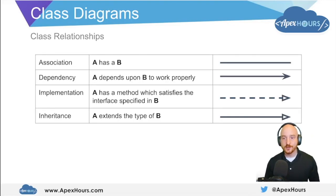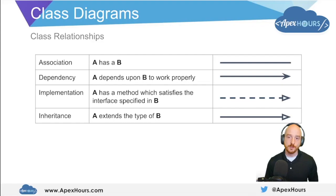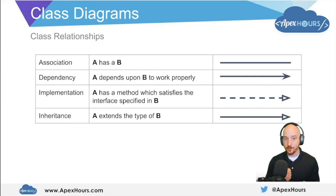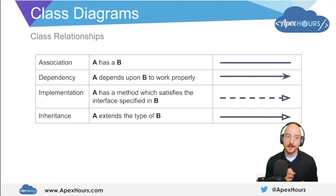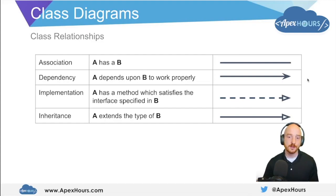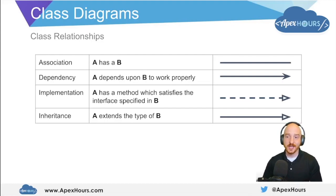When we use class diagrams, it's rare that we have a single class — there are usually multiple classes with relationships to each other. Here are the most commonly defined relationships we'll focus on in this series. Association means that A has a B — the A class has a variable of type B. Dependency, defined by a one-way arrow, means A depends upon B to work properly — for example, B has a static method called by A — meaning A cannot operate unless B is operating effectively.